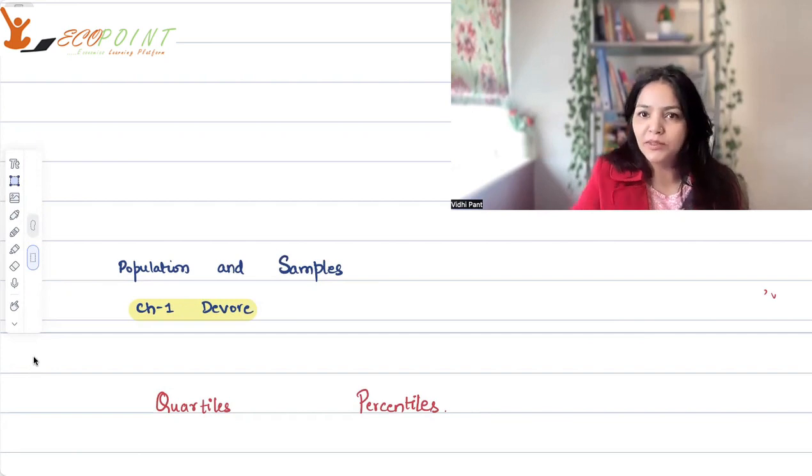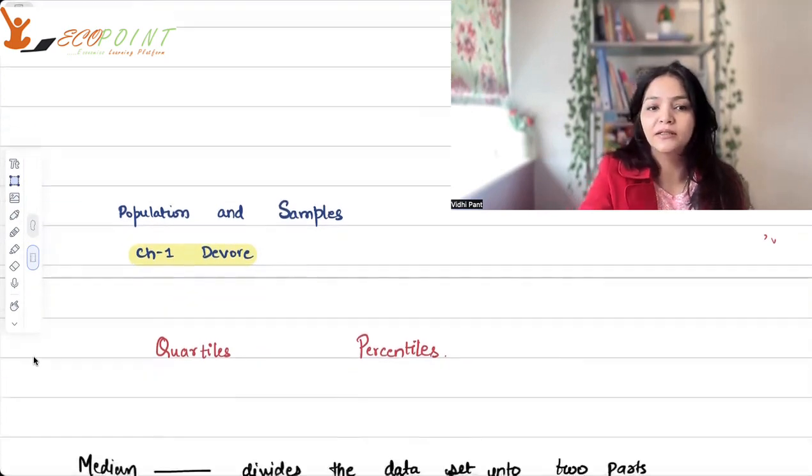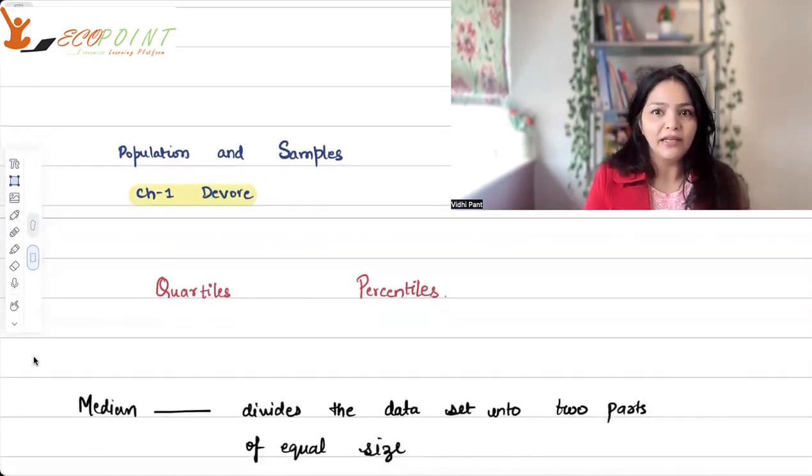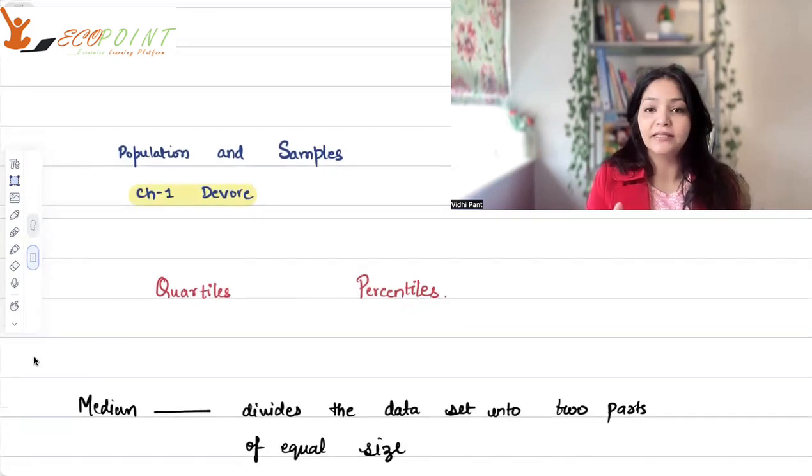In the previous class, we spoke about median. So what is median? Median is that value that divides the data set into two equal parts. Median is the middle value.